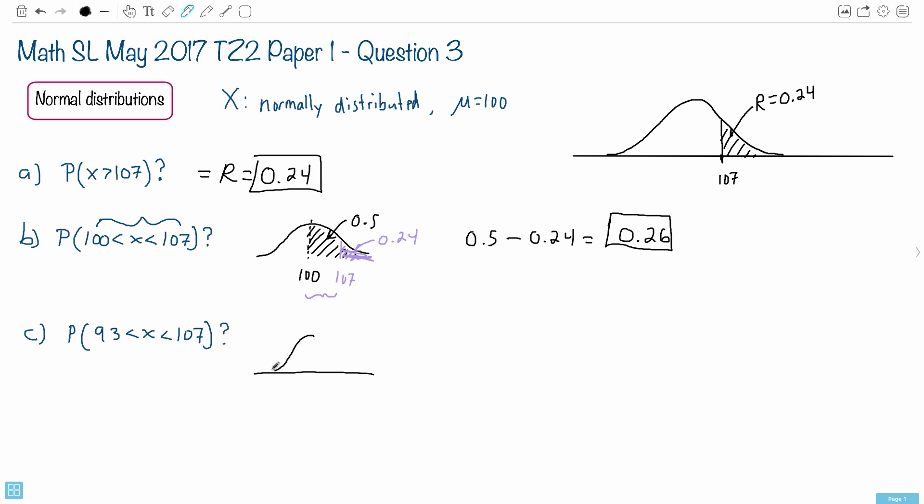Well, we know a couple of things. We know that 100 is the mean, that's the center. At 107, we know something about this area here. We also know something about this area here in case we need them.